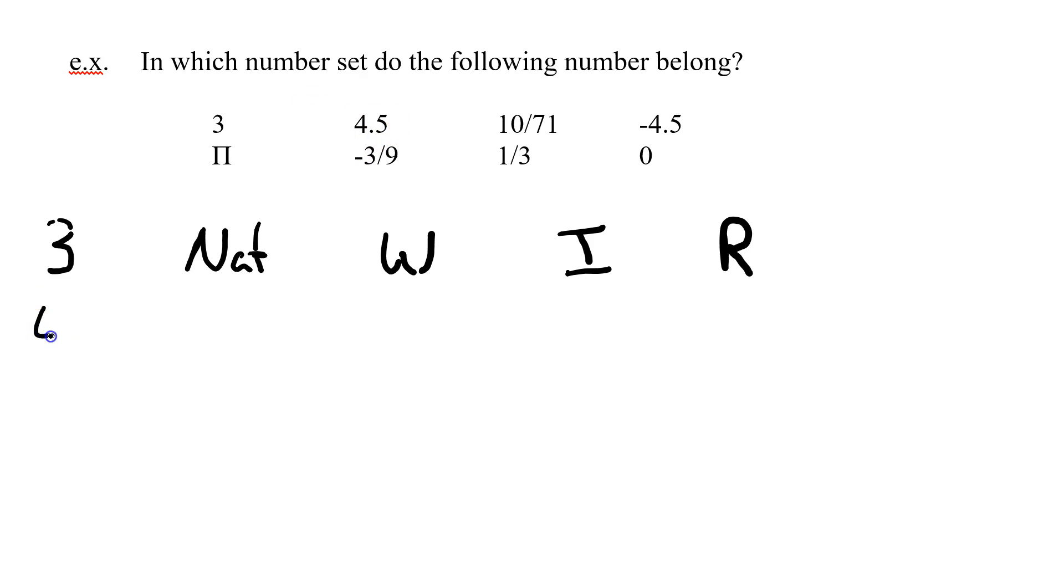Next one, 4.5. Well, 4.5 is not natural. It's a decimal. It's not a whole either. It means it's not an integer. So it can only be rational.